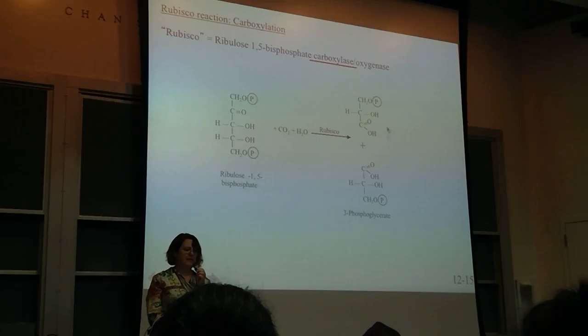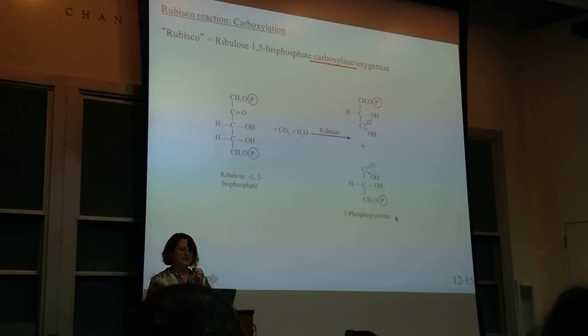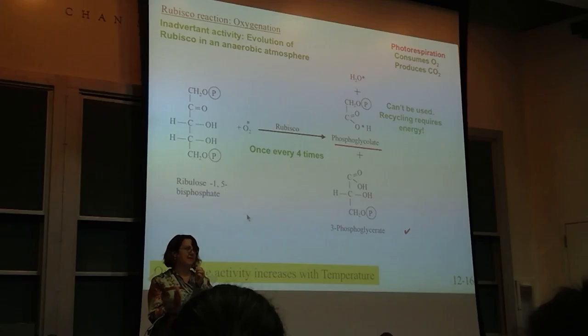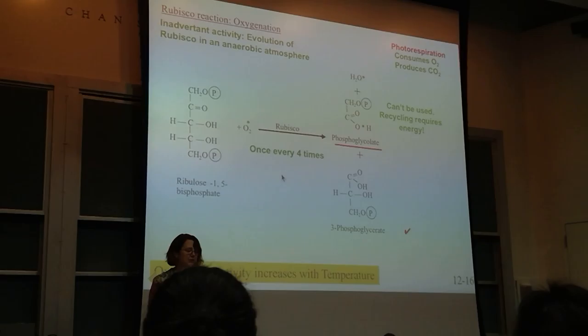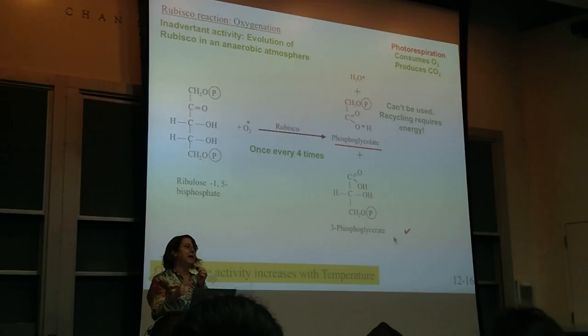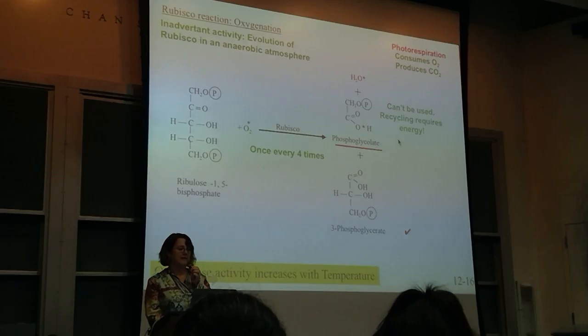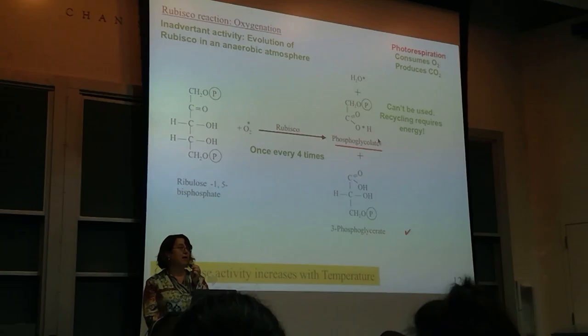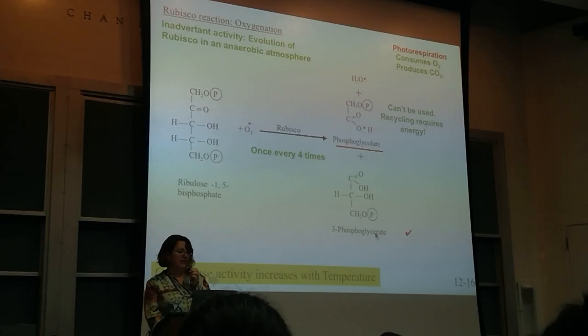Typically with the carboxylase you get the 2 3-PGA, and that continues in the cycle. But with the oxygenase—which happens roughly once every four times (it's temperature dependent; at standard conditions we say four times)—you get one 3-phosphoglycerate that can keep going in the normal cycle, but you also get another product, phosphoglycolate, which cannot be used. So you have to convert this phosphoglycolate (also called glycolate) into 3-PGA that can be used in the cycle.